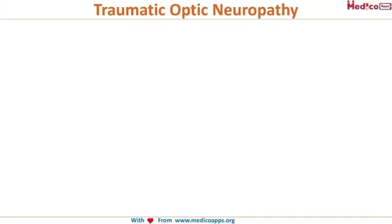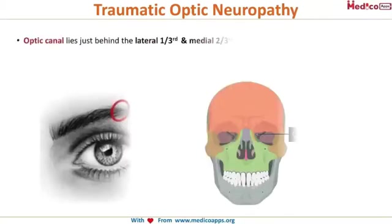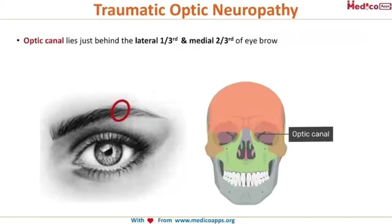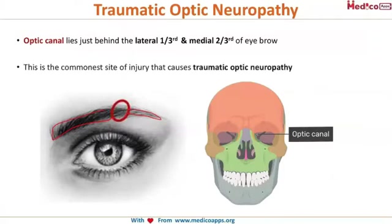Now let's look at traumatic optic neuropathy. The optic canal lies just behind the junction of the lateral one-third and medial two-thirds of the eyebrow — that is the surface marking for the optic canal. This is the commonest site of injury causing traumatic optic neuropathy, because the optic nerve passes through the optic canal, making it the most common site for optic nerve neuropathy due to trauma.